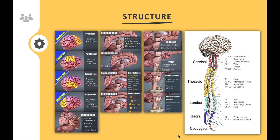The cerebellum is responsible for muscle coordination, balance, and posture. The diencephalon consists of the thalamus and the hypothalamus. The thalamus is more related to directing sensory impulses to the cerebrum, whereas the hypothalamus is responsible for the regulation of temperature, water balance, and contraction and dilation of blood vessels in the body. The hypothalamus is also the part responsible for controlling and regulating your emotions.